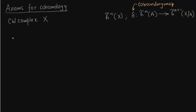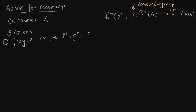Let us write down the three corresponding axioms for cohomology. These are again similar to what we wrote in homology. Axiom 1: if two maps f and g are homotopic, going from space X to Y, then they give the same group homomorphism between cohomology groups. The n written as subscript should actually be superscript. And you can notice the contravariance — instead of going from X to Y, you go from H^n(Y) to H^n(X).